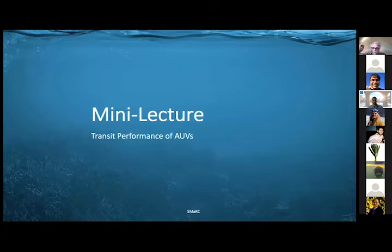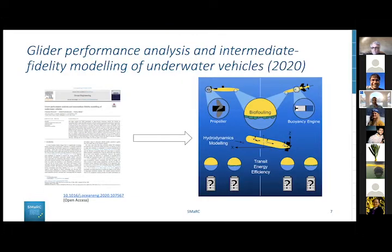Let's jump into my little mini lecture on transit performance of AVs and AUVs. When I say AVs I refer to any kind of autonomous underwater vehicle. Some people think gliders are a separate category, but I think it's one category. The research we published last summer or autumn was titled 'Glider Performance Analysis and Intermediate Fidelity Modeling of Underwater Vehicles.' It's a collaborative project from me and my supervisor Jacob Kuttenkeuler and Thomas Melin, who is an external collaborator now affiliated with FOI.